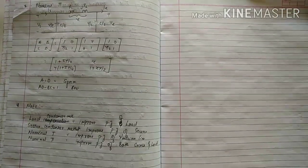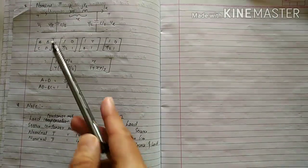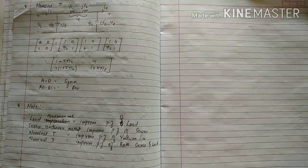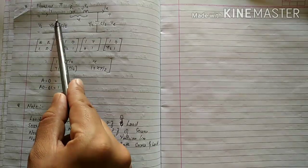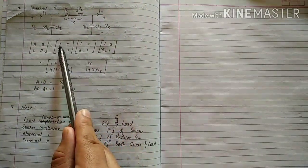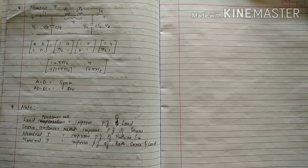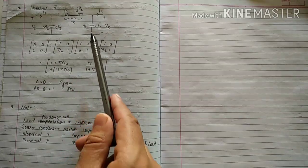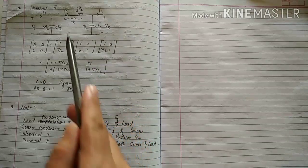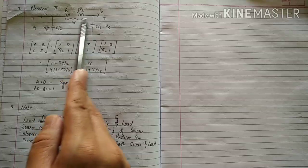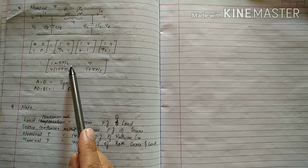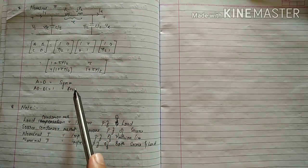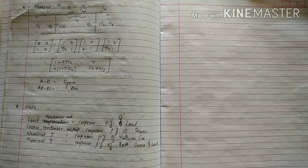The last model is the nominal pi method. In nominal pi, the capacitance is divided by 2 and connected at both ends, and the impedance is connected in the middle. The ABCD parameters are calculated by multiplying three matrices: [1, 0; Y/2, 1] × [1, Z; 0, 1] × [1, 0; Y/2, 1], giving A equals 1 plus ZY/2, B equals Z, C equals Y(1 plus ZY/4), D equals 1 plus ZY/2. Again, A equals D so it is symmetrical, and AD minus BC equals 1 so it is reciprocal.